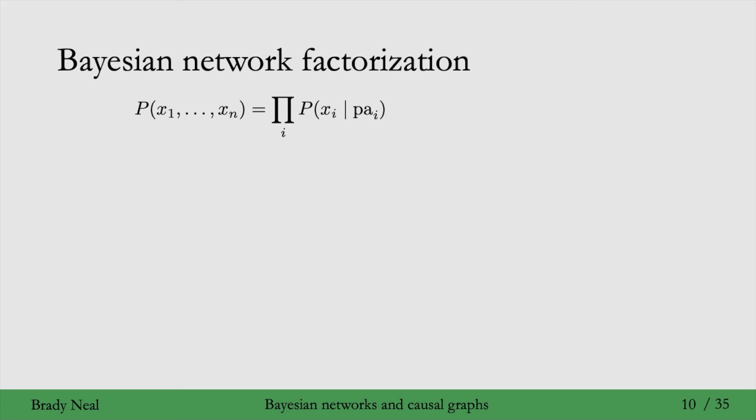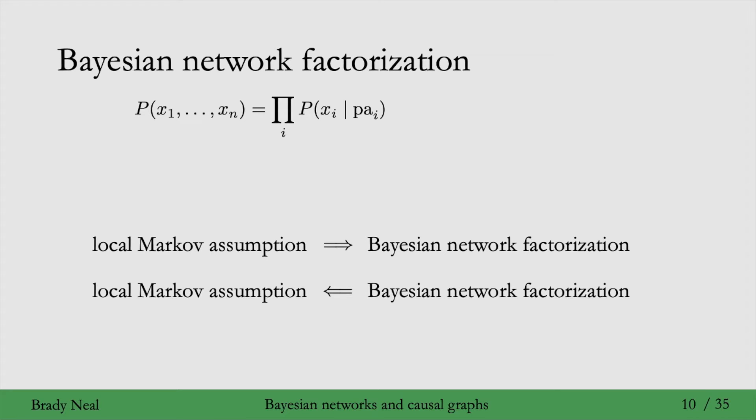If you remember from a couple slides ago, the way we actually did the example in the last slide is using the local Markov assumption. And then that example, we generalized it in this slide to the Bayesian network factorization. So we were given the intuition for this implication that the local Markov assumption implies the Bayesian network factorization. And it turns out that the Bayesian network factorization also implies the local Markov assumption. So these two related properties are actually equivalent.